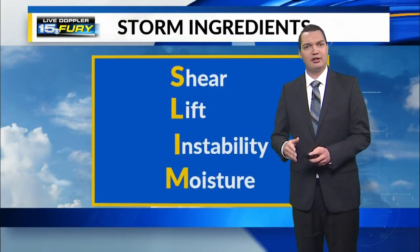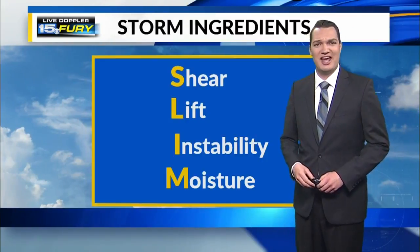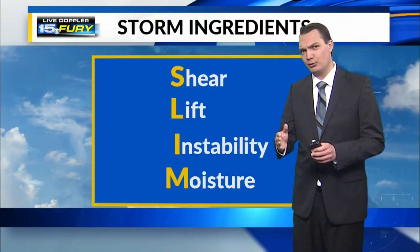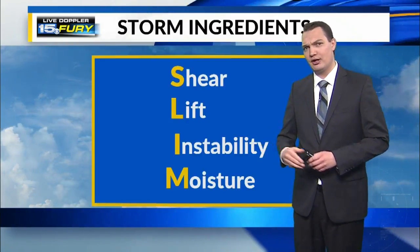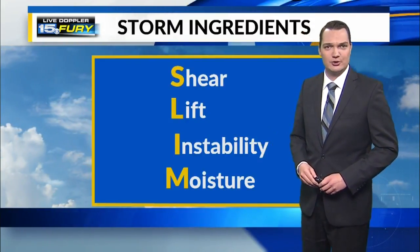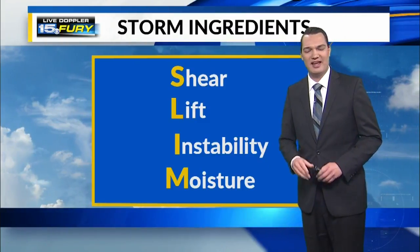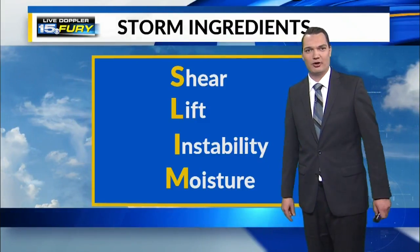Moisture, lift, and instability are needed for the development of thunderstorms, but the shear is what can make an ordinary thunderstorm into a severe storm capable of producing a tornado. This is what we're going to dig into.